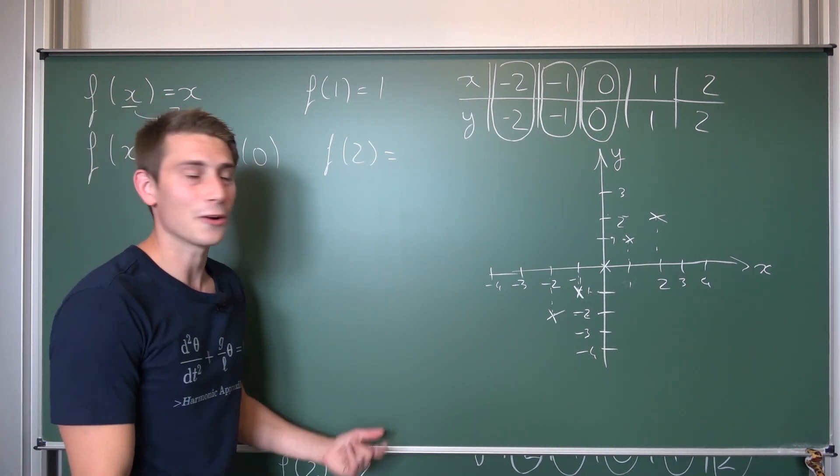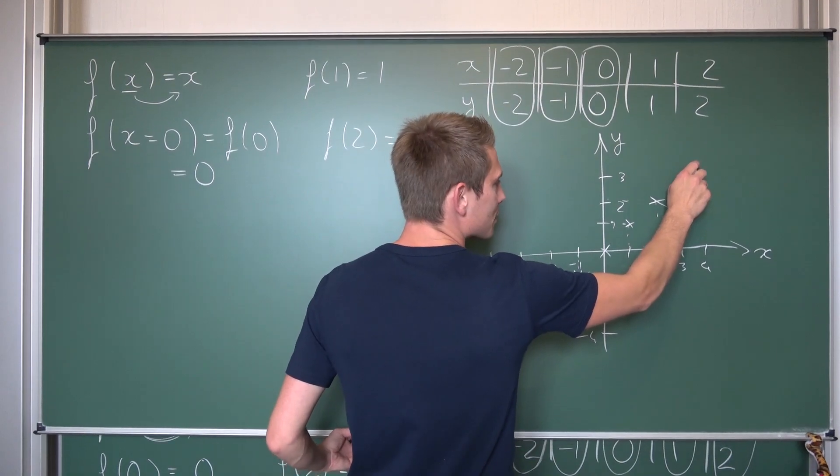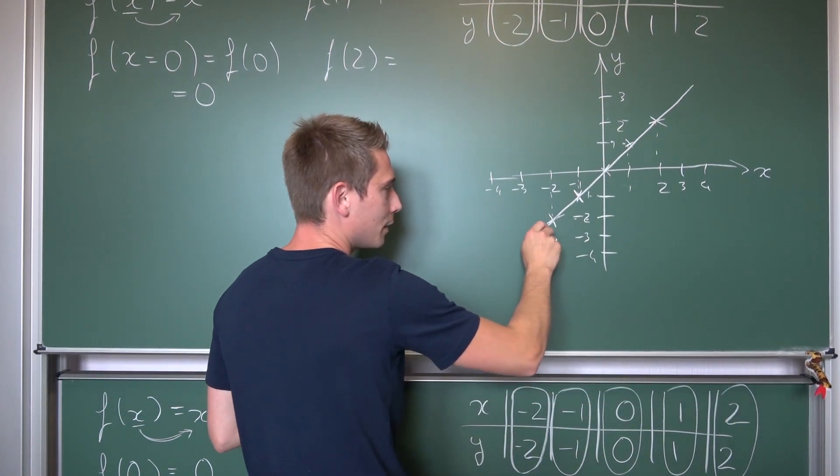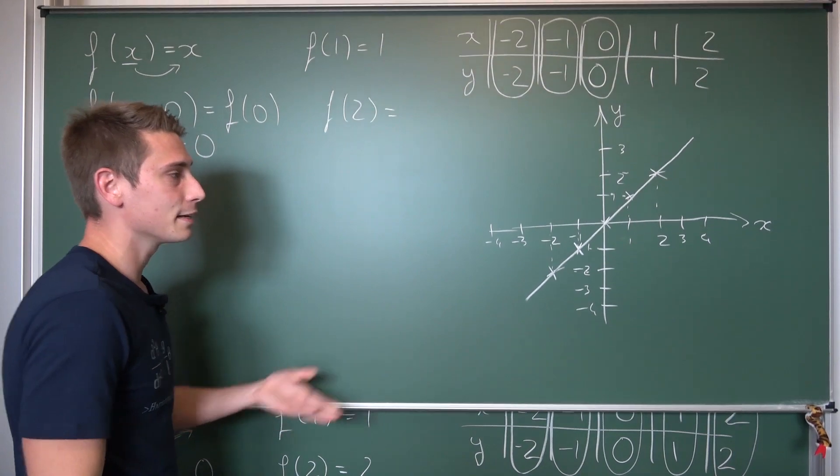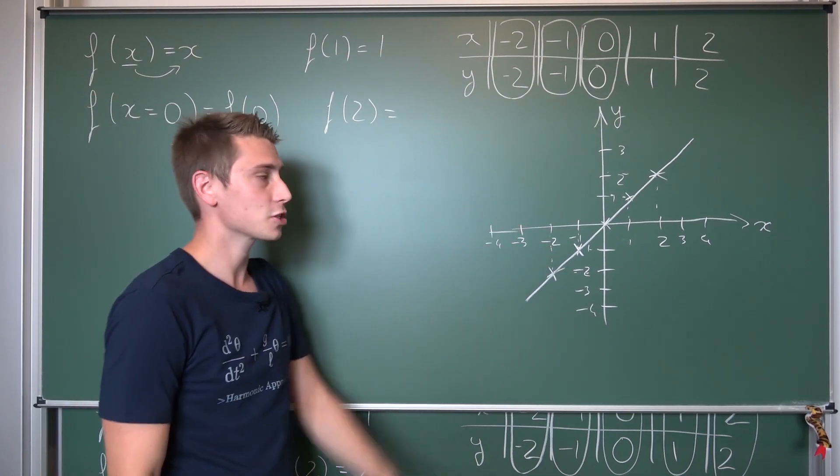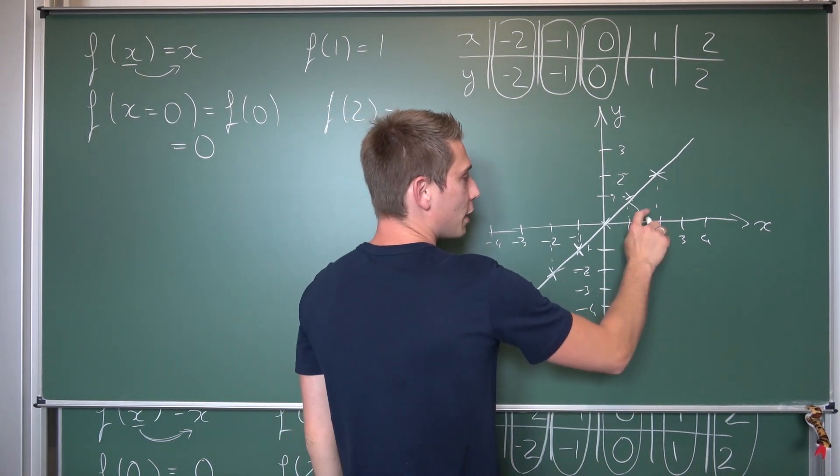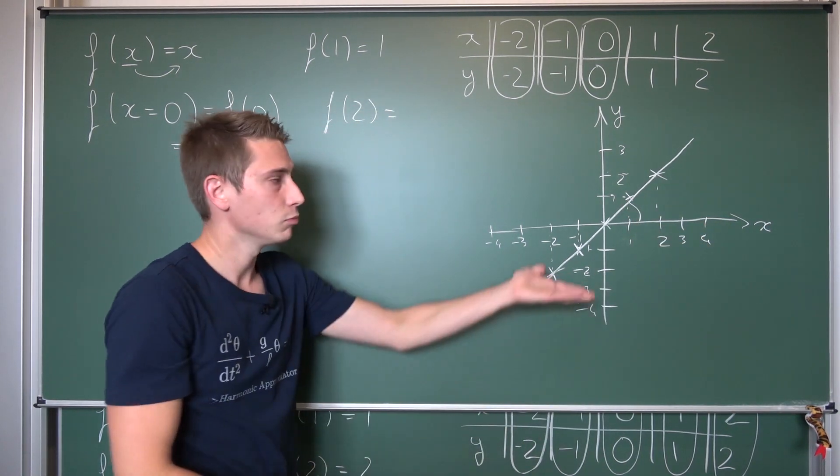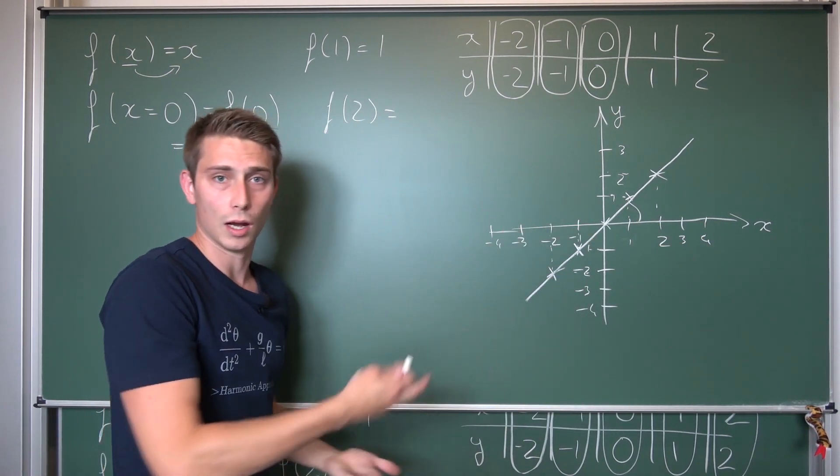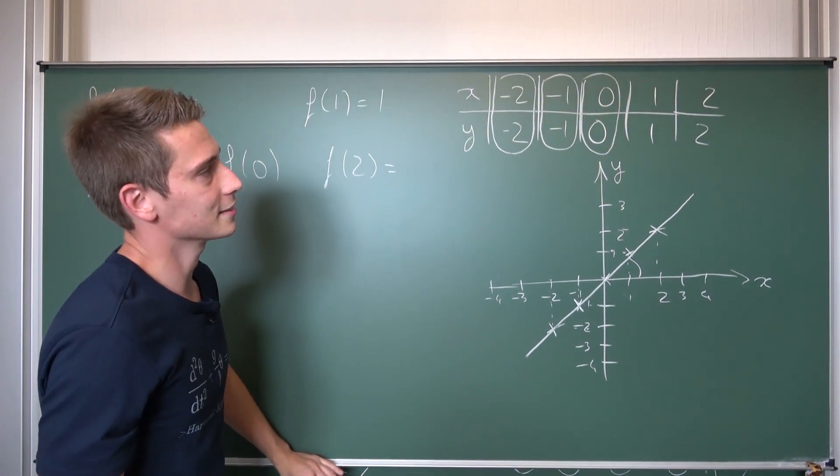Now we can play connect the points, basically. We are going to get ourselves a certain trend line. And this is it. This right here is our identity function. It's basically just a line going upwards in a 45 degree angle from our x-axis.